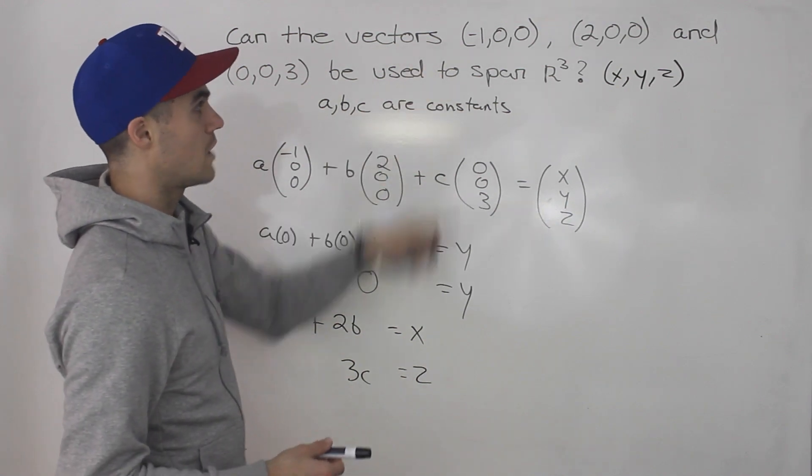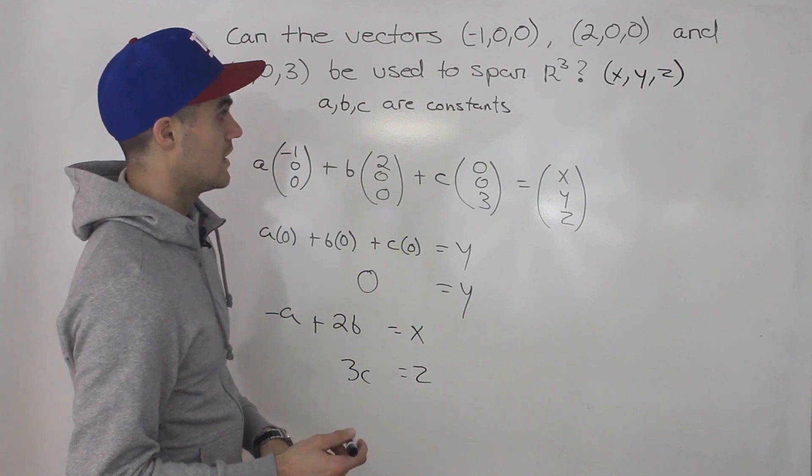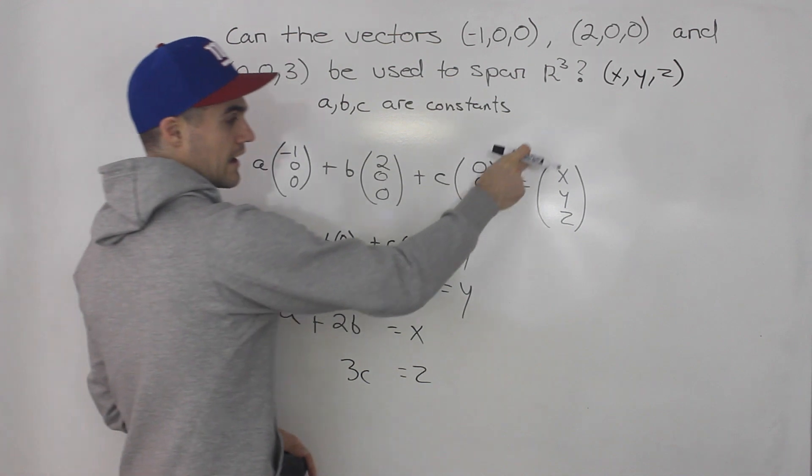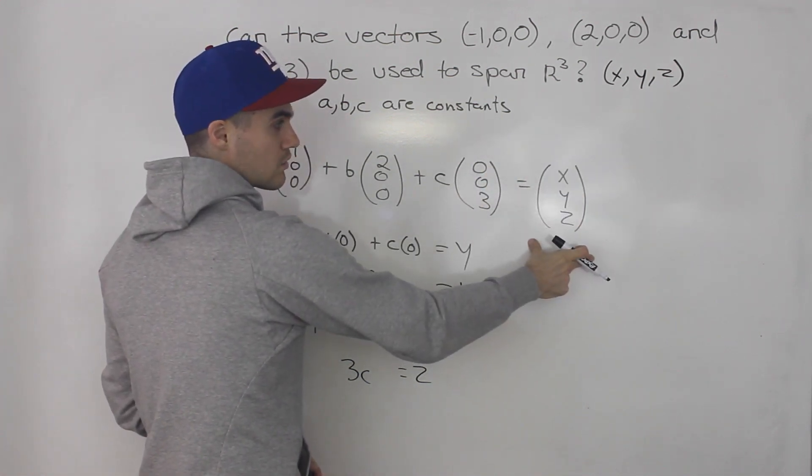So these three vectors cannot be used to span R³ because we can't take a linear combination of them and write out any vector that we want in R³.